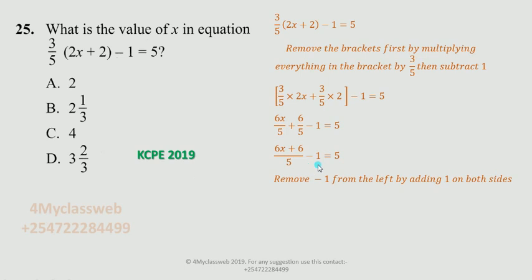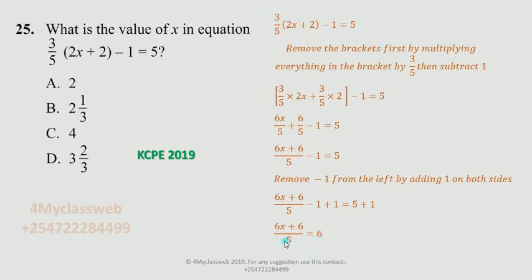I want to remove the minus 1 from the left side, which can be done by adding 1 on both sides. Taking 6x plus 6 over 5 minus 1 and adding 1 to both sides: the minus 1 and plus 1 on the left side cancel to give 0, and on the right side 5 plus 1 gives 6. So on the left side I have 6x plus 6 over 5 equal to 6.